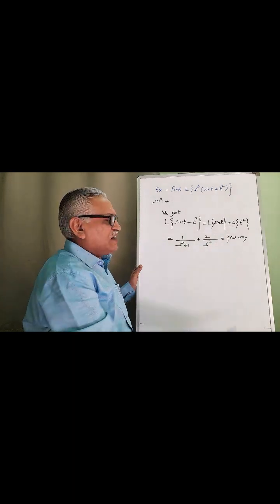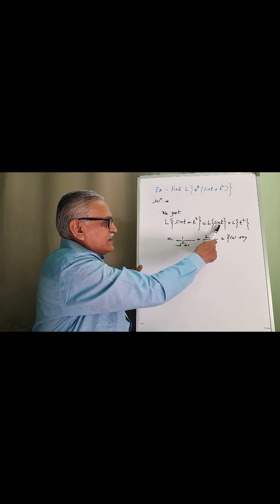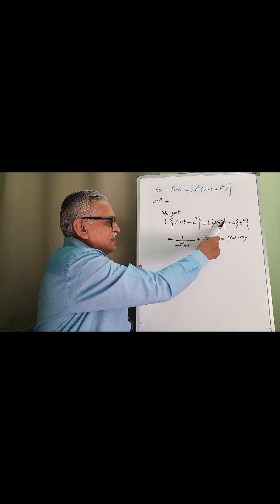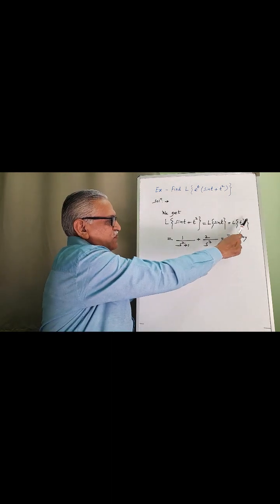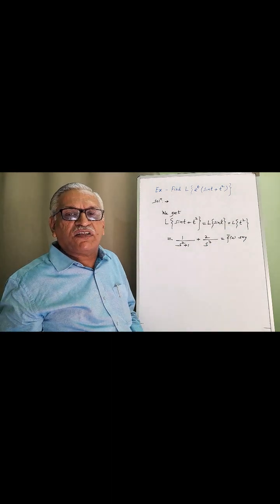Separately obtaining Laplace: Laplace of sin t plus Laplace of t square. Laplace of sin t, as per standard result, it is 1 upon s square plus 1, as a is here 1. And Laplace of t square is 2 factorial divided by s cube, and we call this as f bar of s.